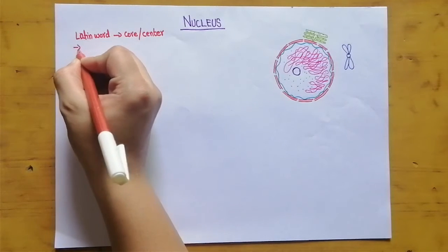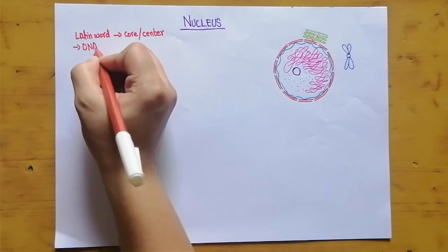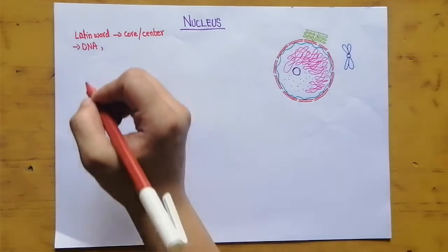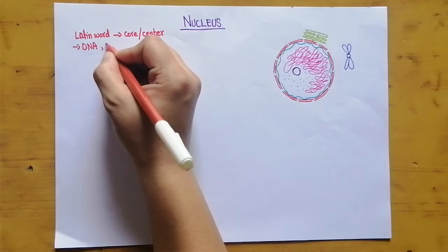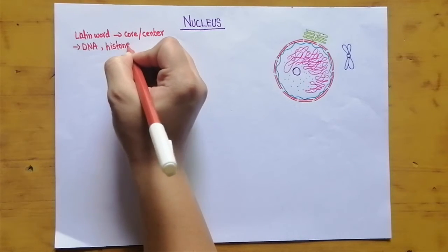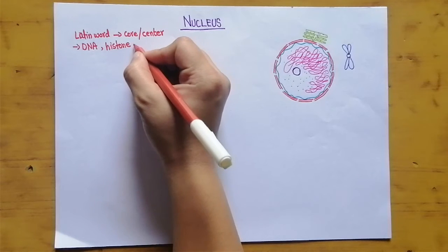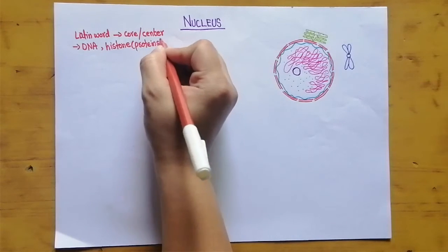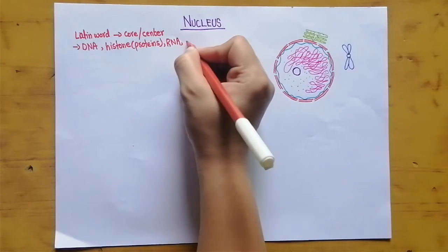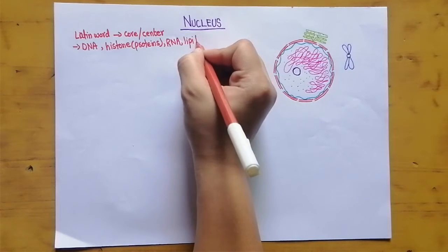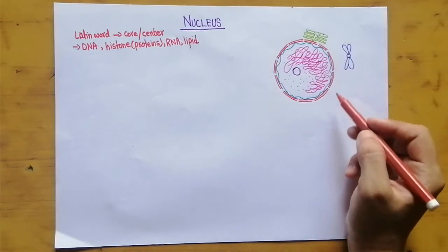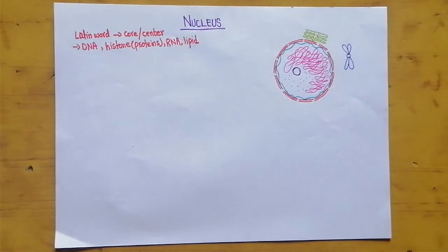The nucleus is made up of DNA, which is the genetic material. Along with this, it is made up of histone proteins, RNA, and lipids — all these molecules are present inside the nucleus.